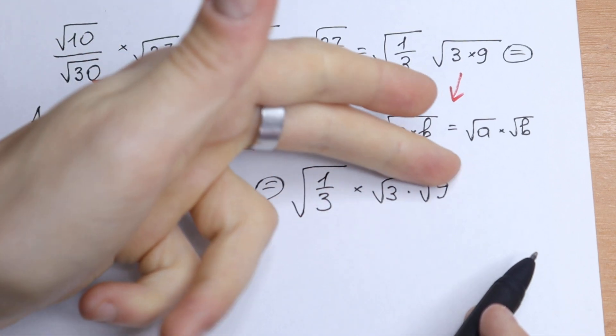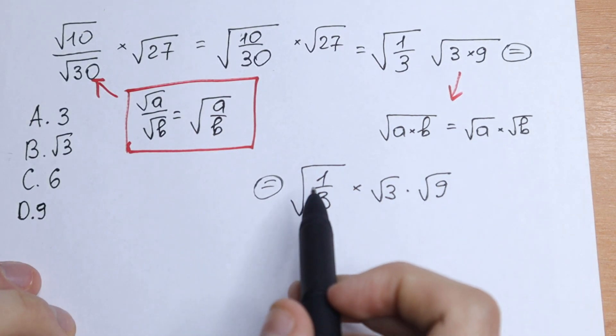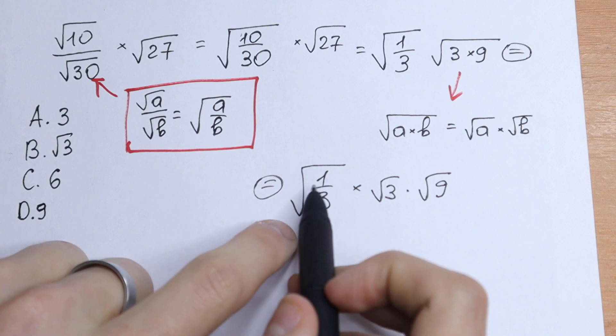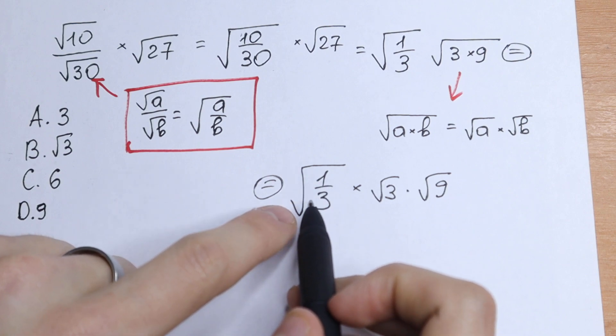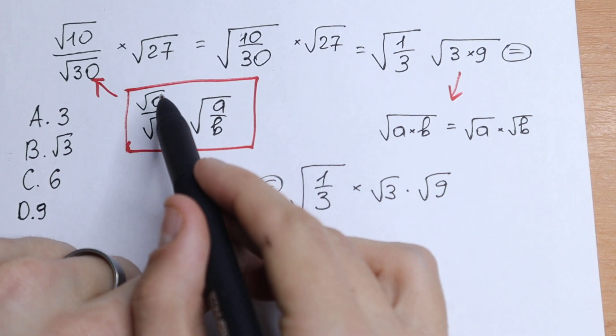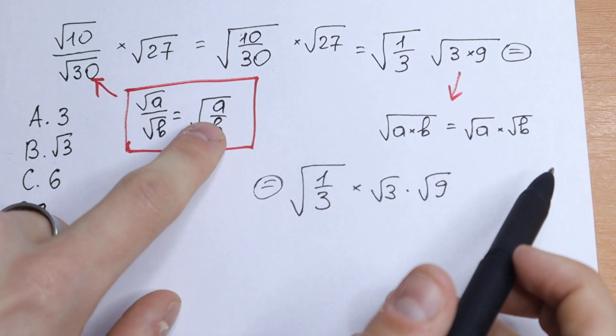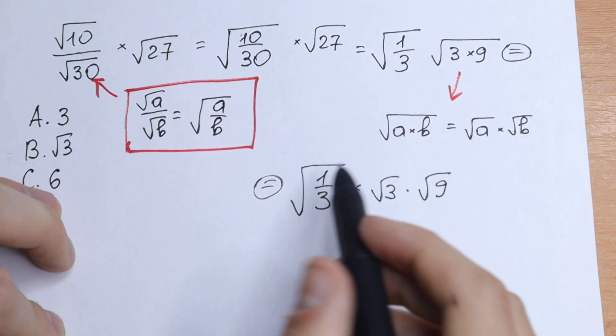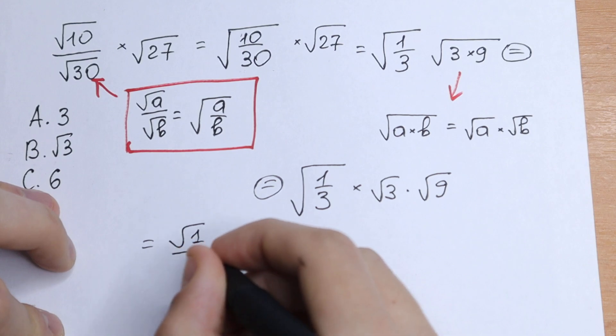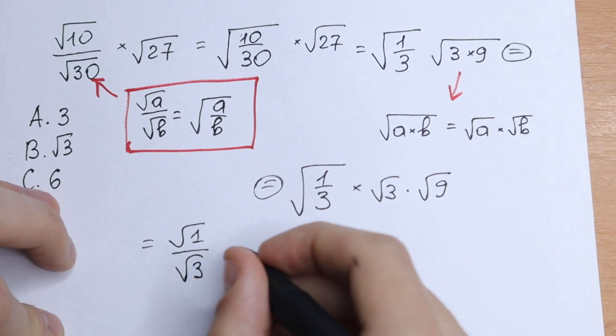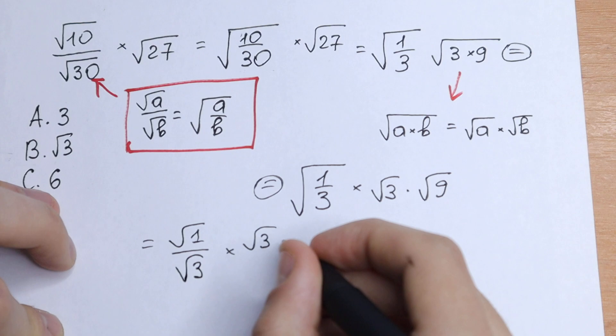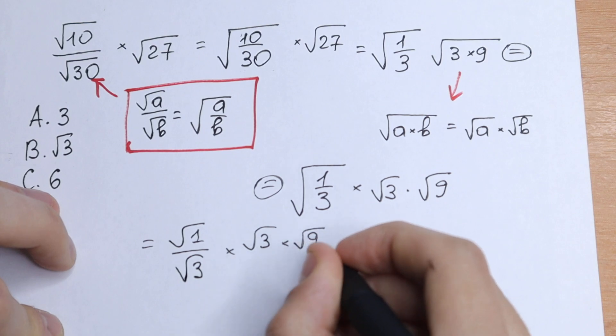Take a look—we have square root of 3 and square root of 9. This is good for us. And moreover, we can write this in a reverse way as square root of 1 times square root of 3, using the rule in reverse. So we can write this as square root of 1 over square root of 3, times square root of 3, times square root of 9.